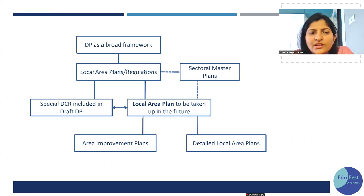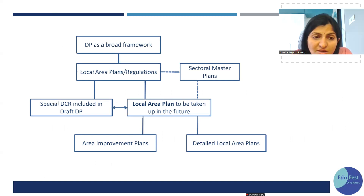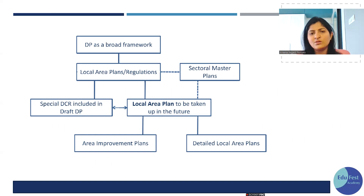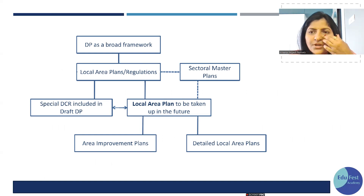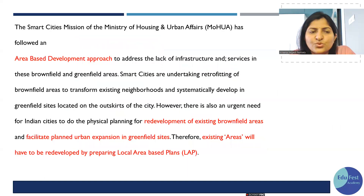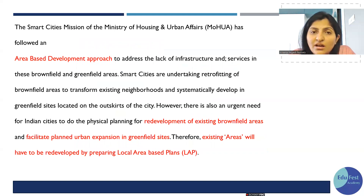Within a DP, Local Area Plans — also called regulation sectoral master plans as used in Delhi — are further subdivided into Detailed Local Area Plans and Area Implementation Plans. If you look at Mumbai's DP, there are many Local Area Plans mentioned there.